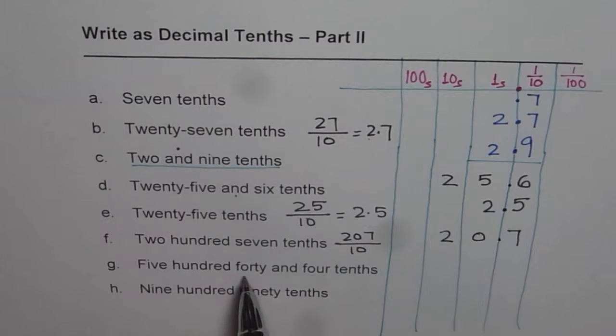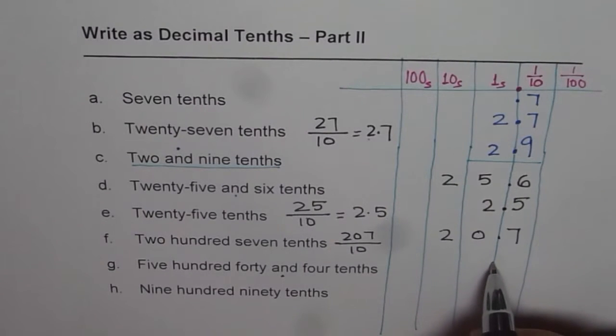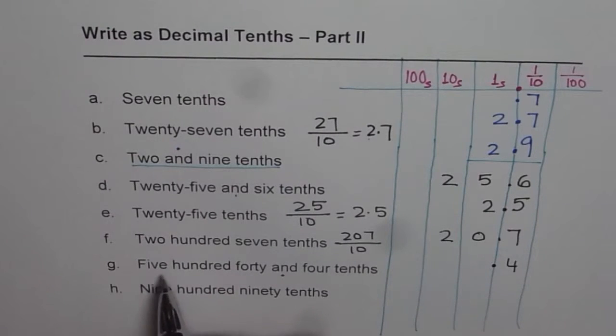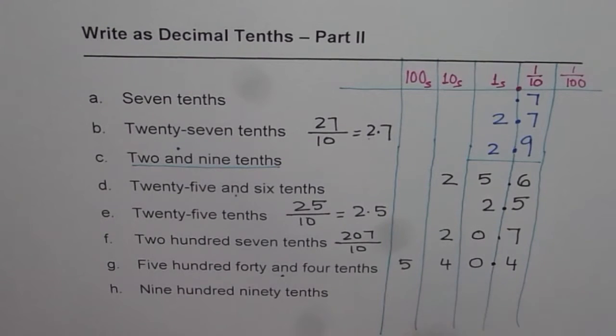Four hundred forty and four tenths. So this is clear. 'And' means decimal here. Four tenths comes here, and the number is 440.4. I hope it is very clear.